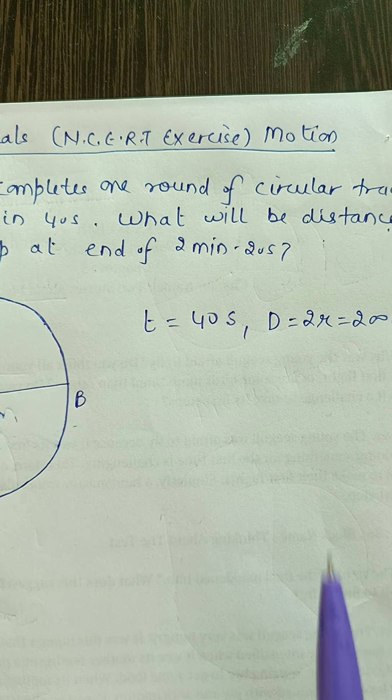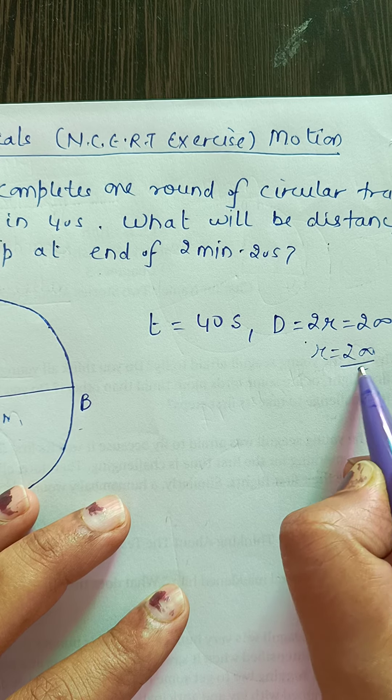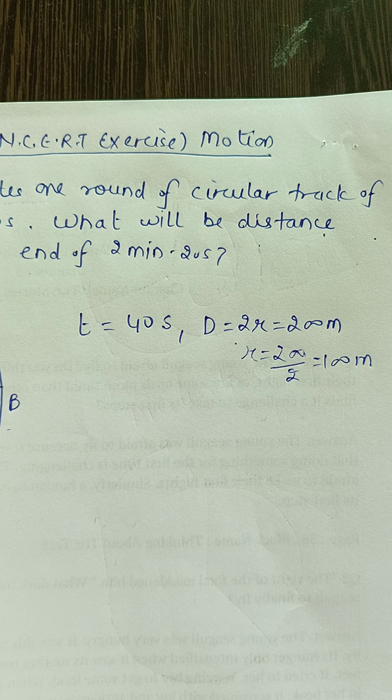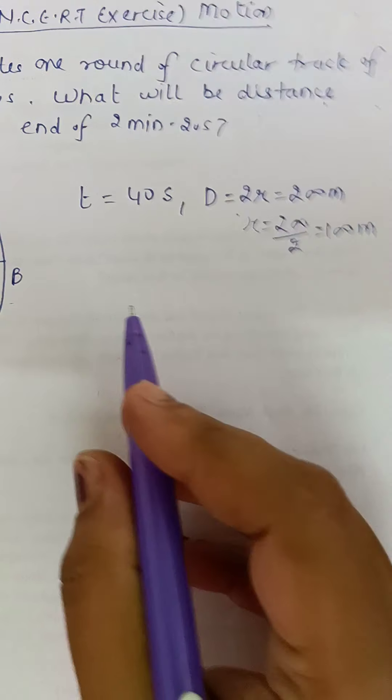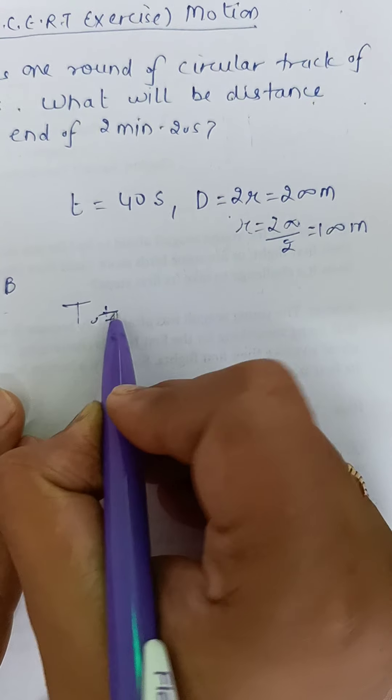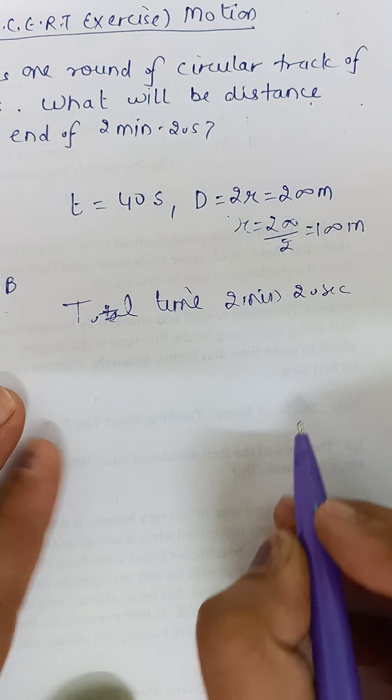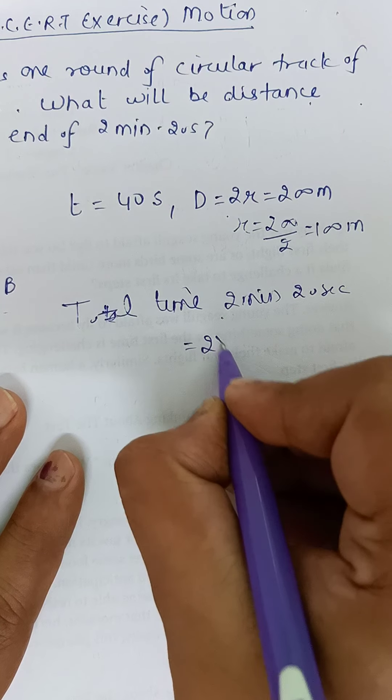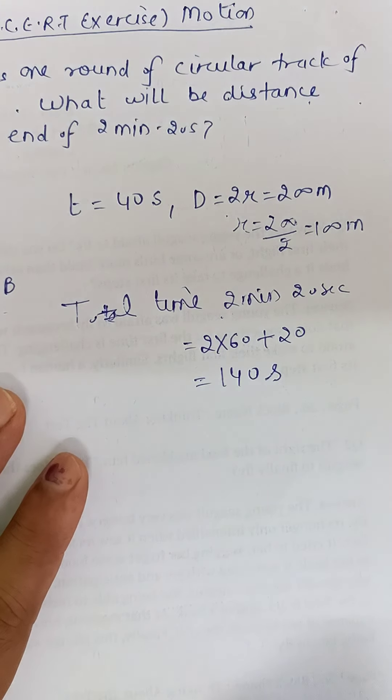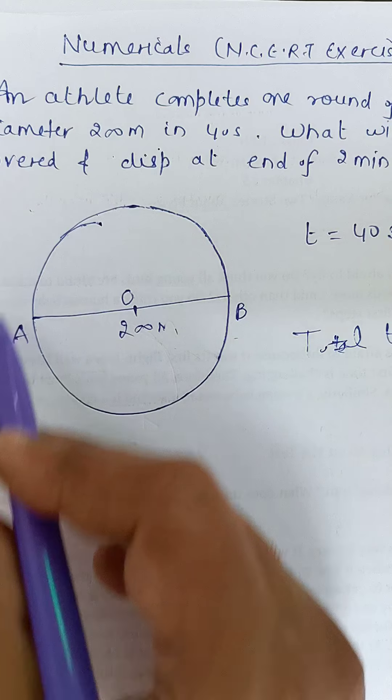What will be distance covered and displacement at the end of 2 minute 20 seconds? When we need to find this, first note that radius is not given, so radius we will find from 200 by 2, that is 100 meter. Now we have to calculate distance and displacement at the end of total time. This total time is 2 minute 20 seconds, so first convert this time to seconds: 2 into 60 plus 20, this is 140 seconds.